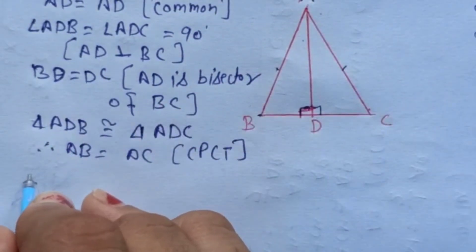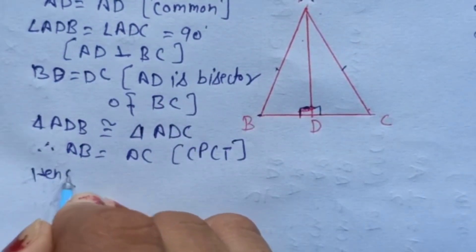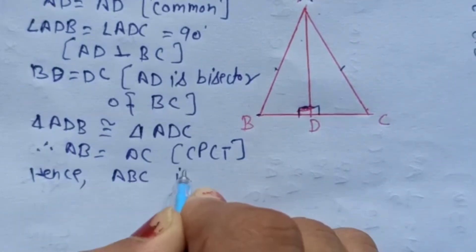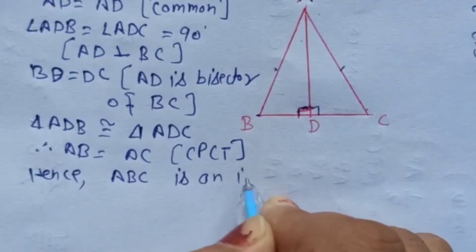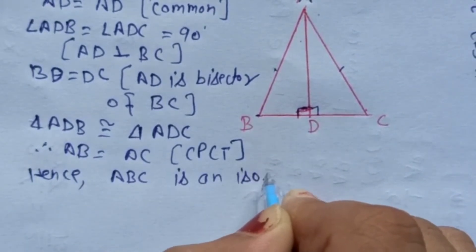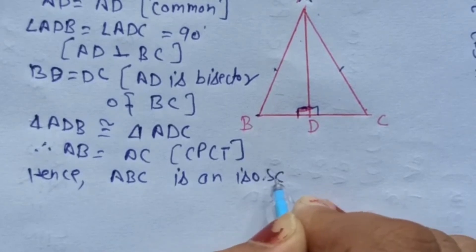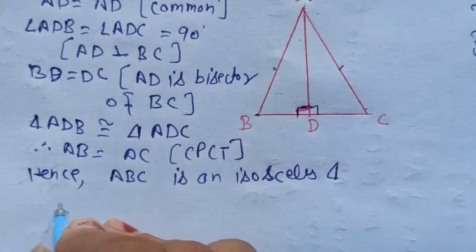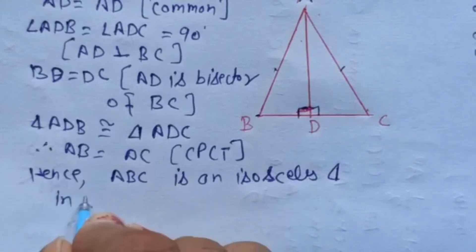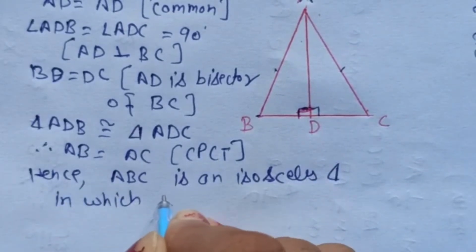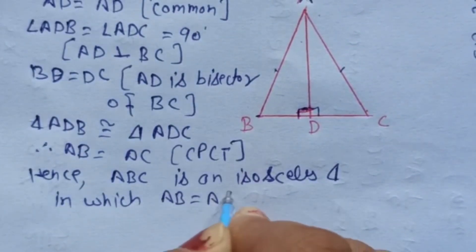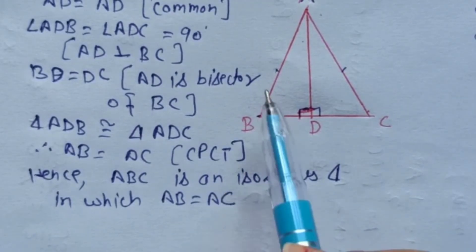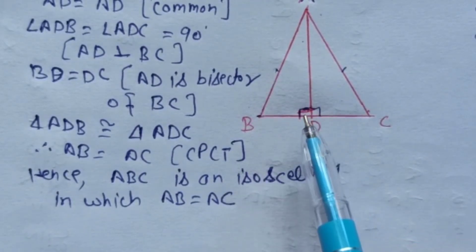Isko hum likhenge: Hence triangle ABC is an isosceles triangle in which AB is equal to AC. Triangle ABC isosceles triangle hai — iske andar hamari AB aur AC equal hain.